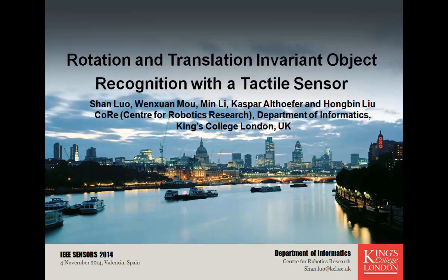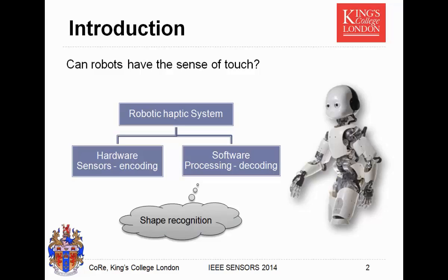First is the motivation of my research. For human beings, we have the sense of touch. We can use our fingers to touch objects or avoid injuries. In dark rooms or in narrow spaces, the sense of touch is very useful, especially for locations where vision is occluded. So we want to enable robots to have the sense of touch as well.